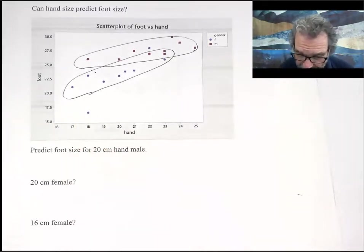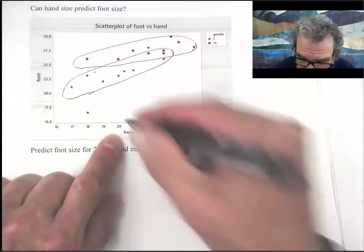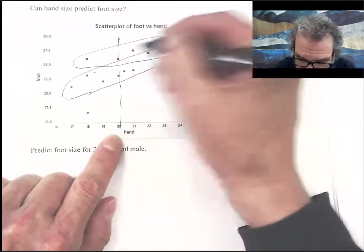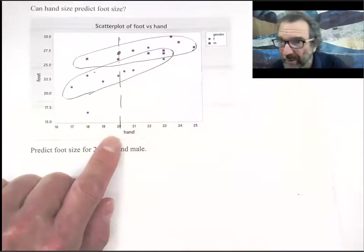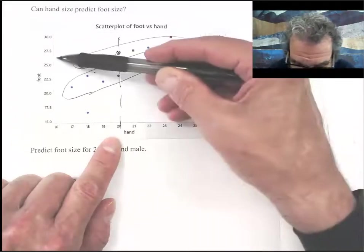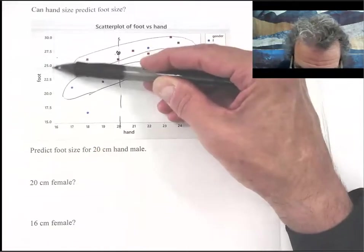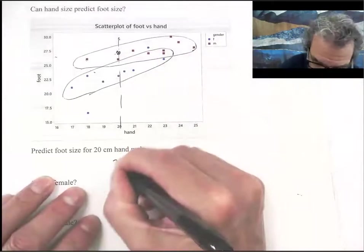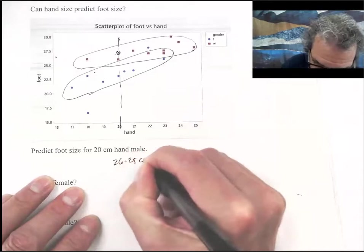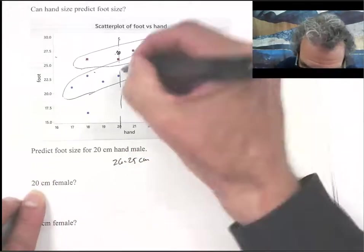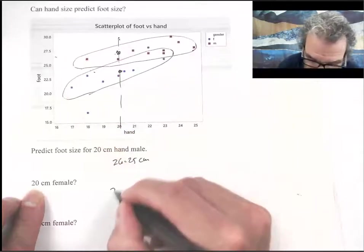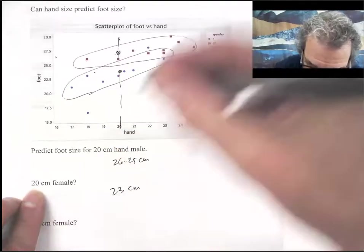Let's try to predict the foot size for a 20 centimeter hand male. Males are the red guys. Here's 20 centimeters here. So up here we might say men might be there. That height might be halfway between 20. So that's one and a quarter. So 26.25. A 20 centimeter female might be here. More like maybe 23 centimeters. I come across this way.